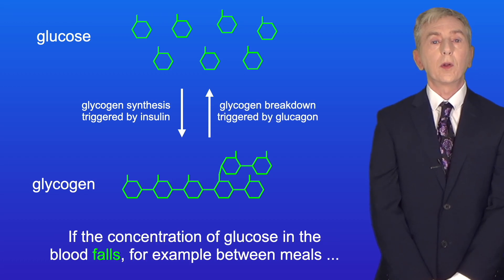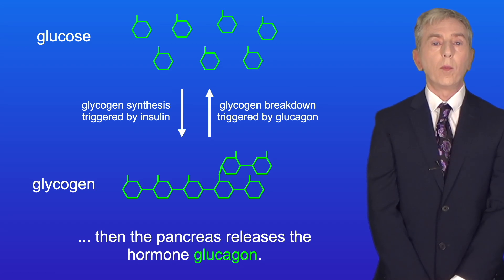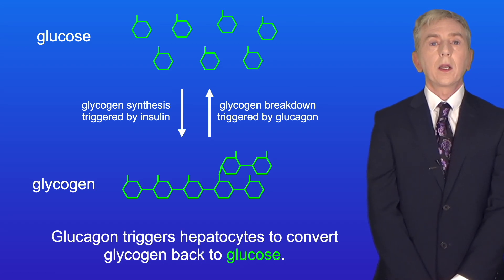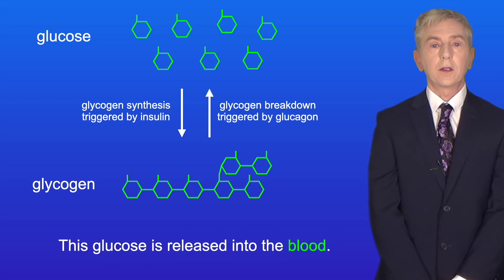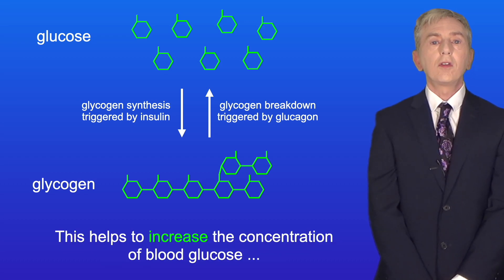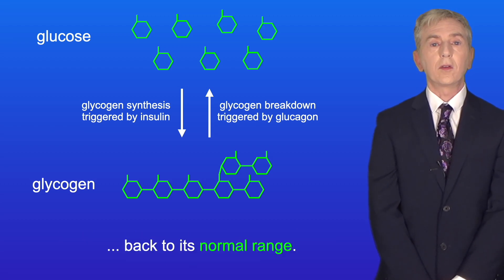If the concentration of glucose in the blood falls, for example between meals, then the pancreas releases the hormone glucagon. Glucagon triggers hepatocytes to convert glycogen back to glucose, and this glucose is released into the blood. This helps to increase the concentration of blood glucose back to its normal range.